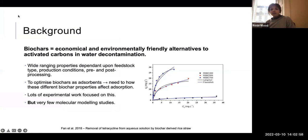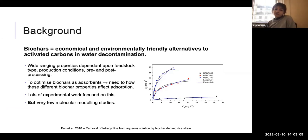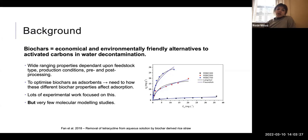I thought I should start with some background. Biochars have great potential to act as economical and environmentally friendly alternatives to activated carbons in water decontamination. But because of their wide-ranging properties, not all biochars are equally effective as absorbents. So in order to optimise them, it's useful to understand how the different properties of biochars affect their absorption properties. There's lots of experimental work focused on this, but very few computational or molecular modelling studies, and this is the research gap I'm trying to fill throughout my PhD.